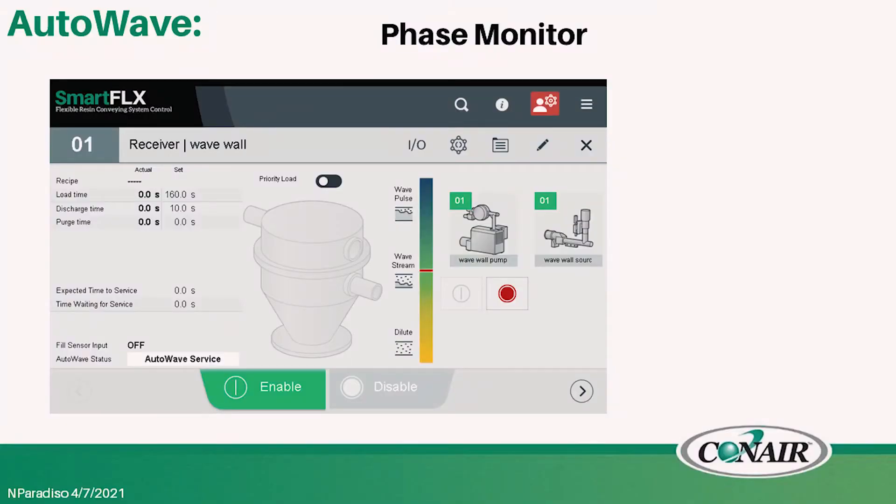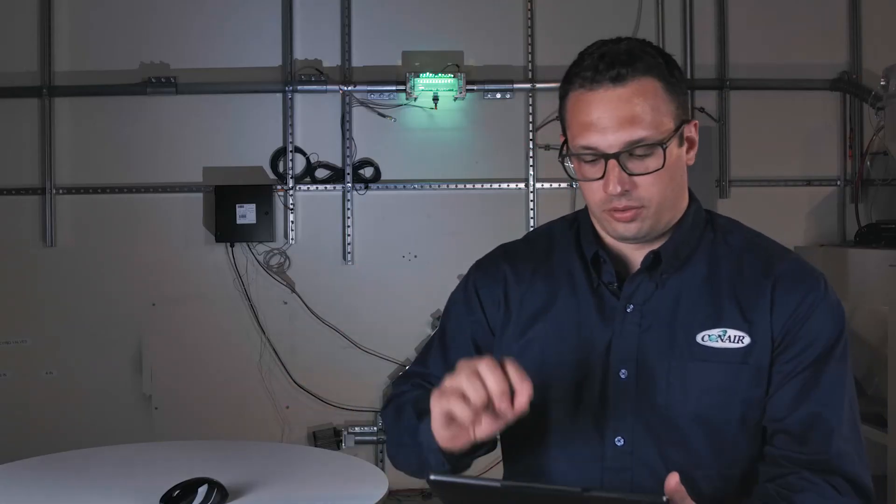What I show in the middle of the screen is a phase monitor, so if AutoWave is hooked up to a wave conveying system on the smart FLX control you have the ability to look down and understand what phase your system is in. If you want to operate in wave pulse you simply select the button of pulse and the system will automatically adjust itself to put it into wave pulse, or if you want to operate in wave stream or dilute phase the system is able to go through and adjust the valve accordingly to what you're looking to do.